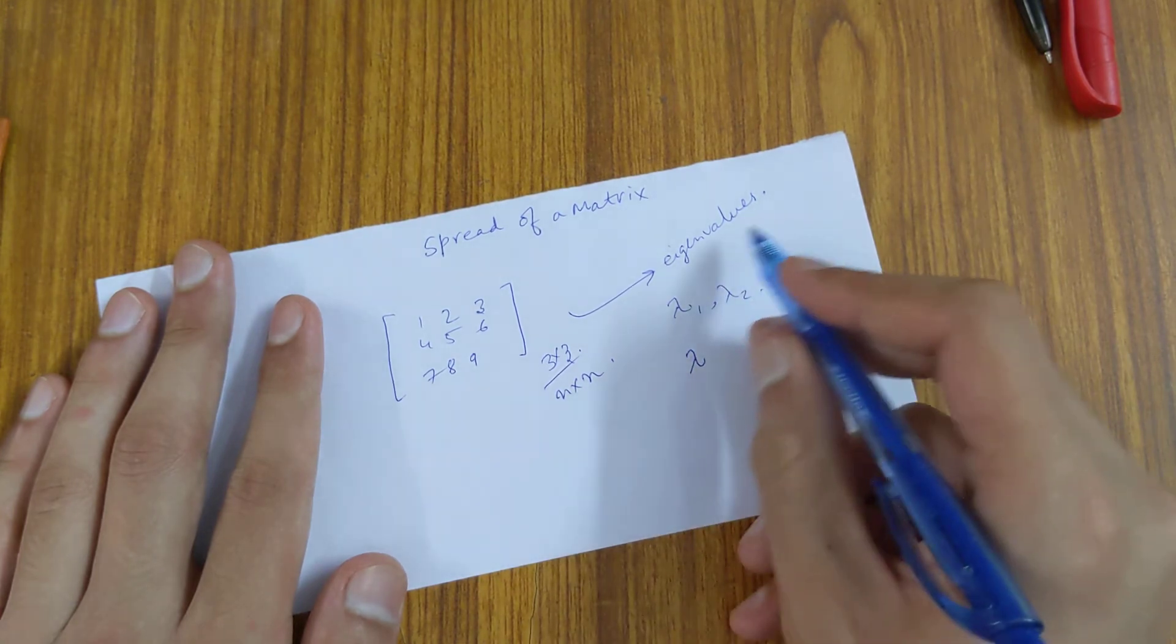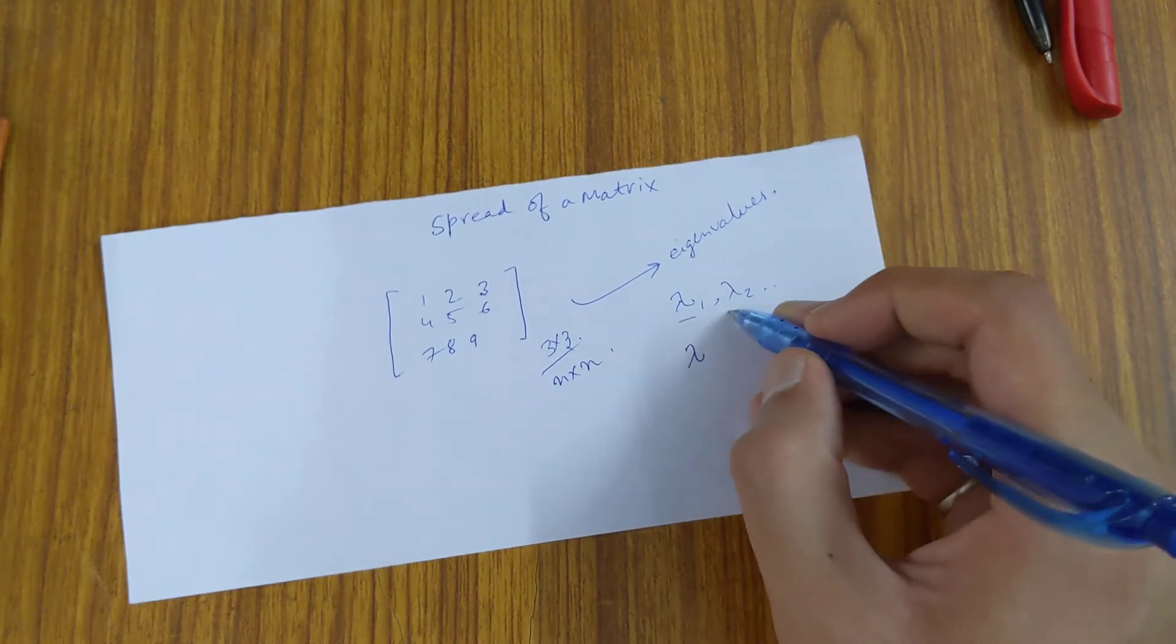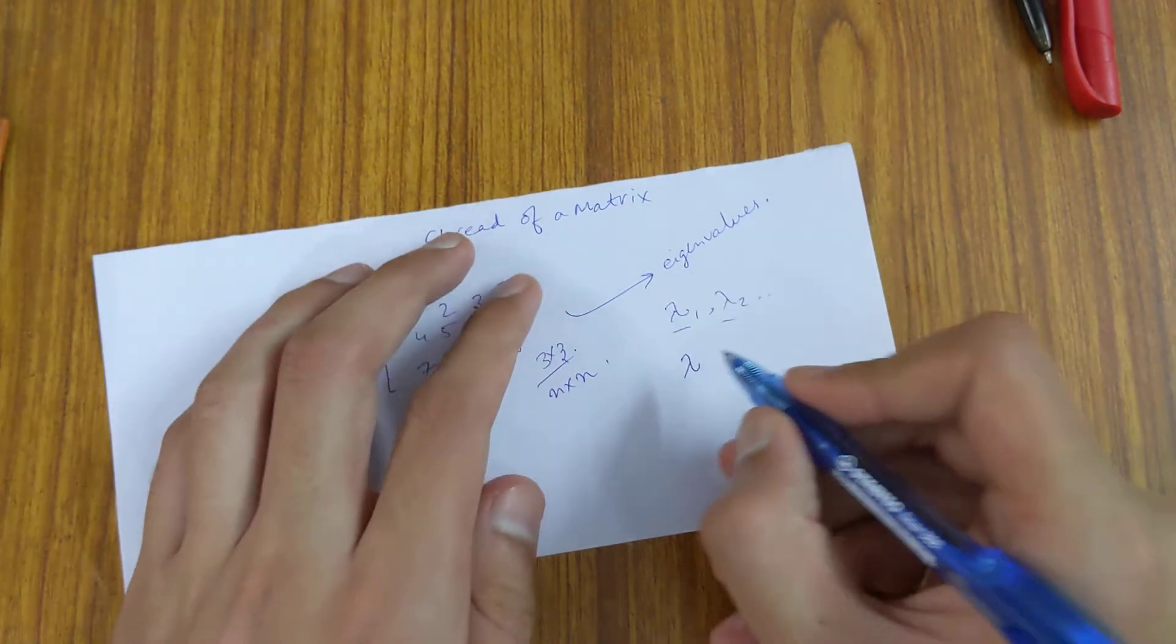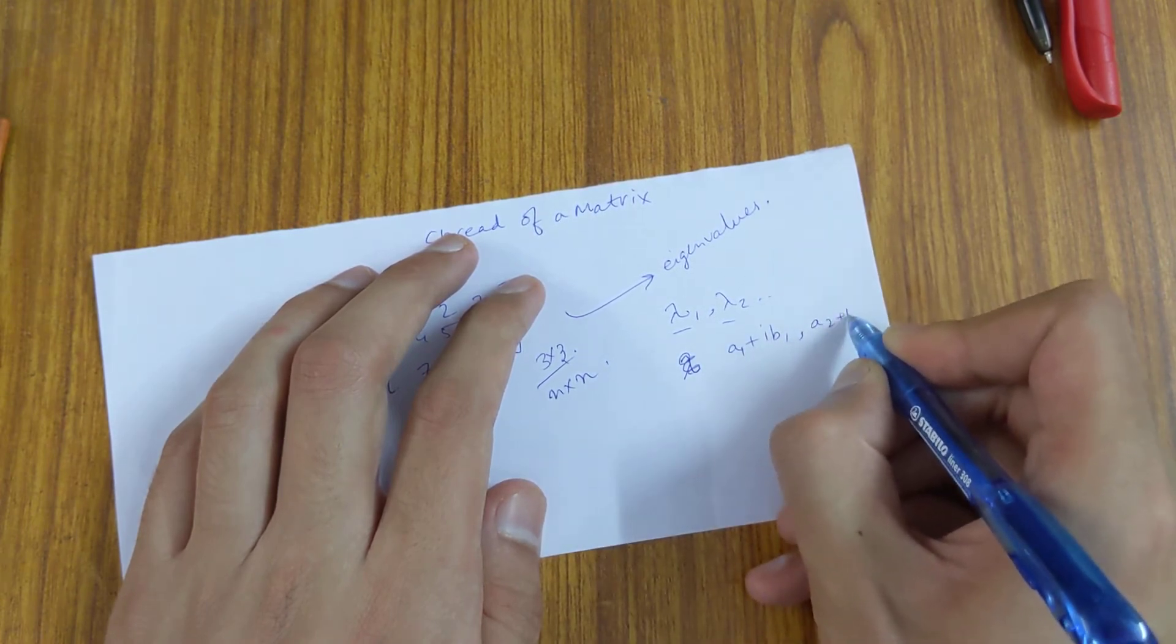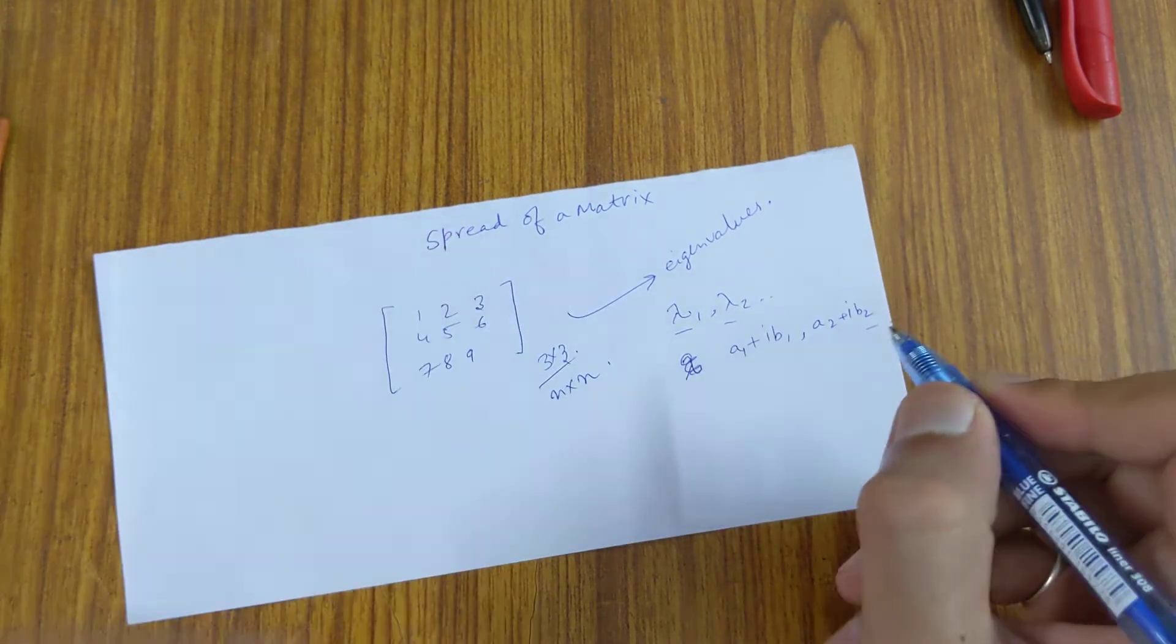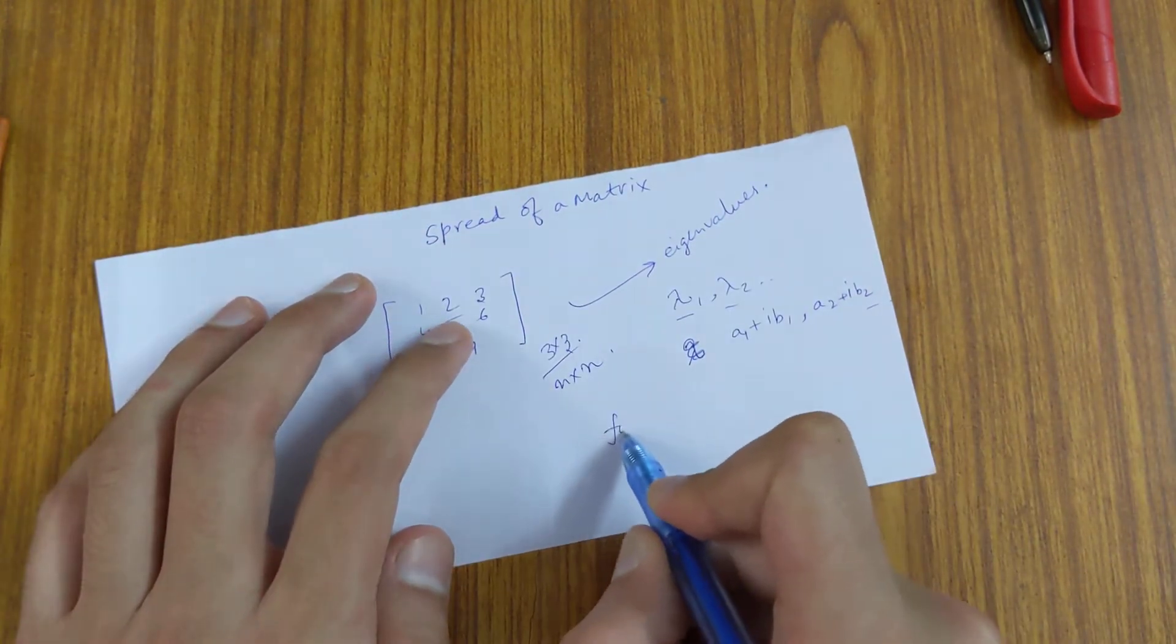So how the spread of a matrix is defined: let's say these are complex values, complex numbers, for example a1 plus iota b1, a2 plus iota b2, and so on. So for all i, j...